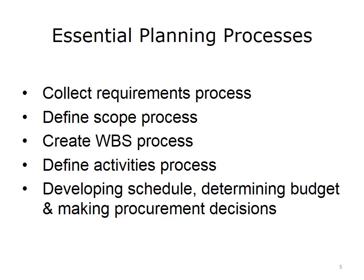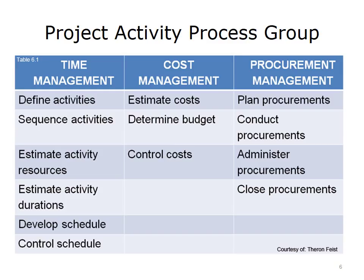This slide provides an overview of the sequence of activities followed by the project team during project planning. The following five essential processes are required to develop a schedule, determine the budget, and make procurement decisions: complete the collect requirements process, complete the scope definition process, create a WBS, begin to decompose or define activities within that WBS, and finally develop a schedule, determine a budget, and begin to make procurement decisions.